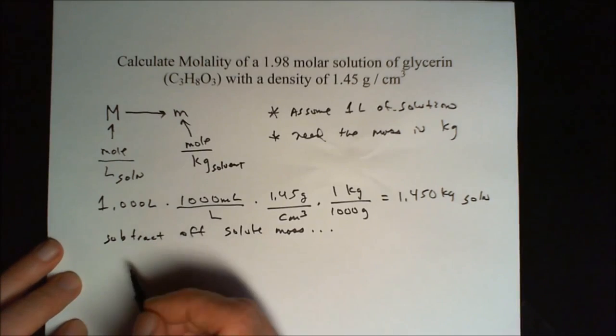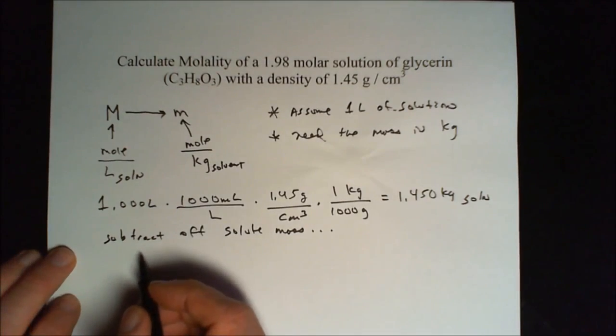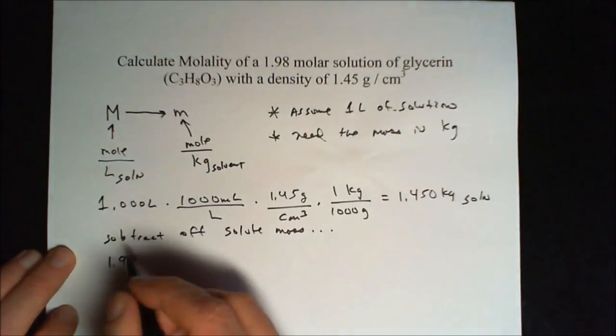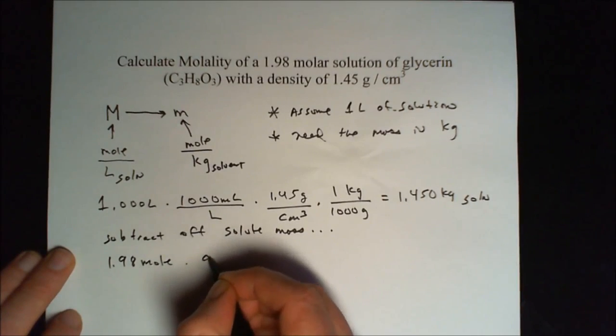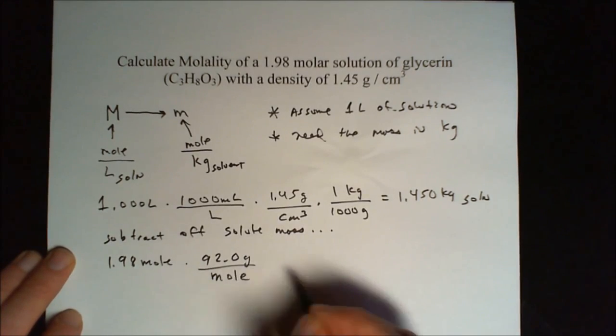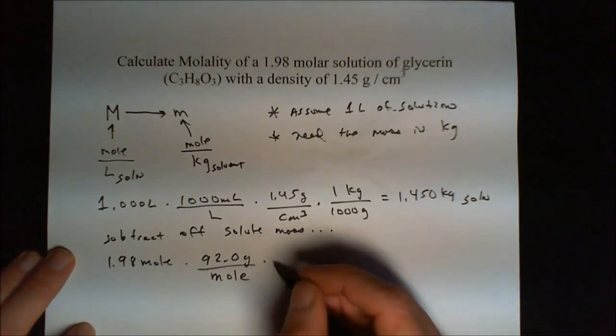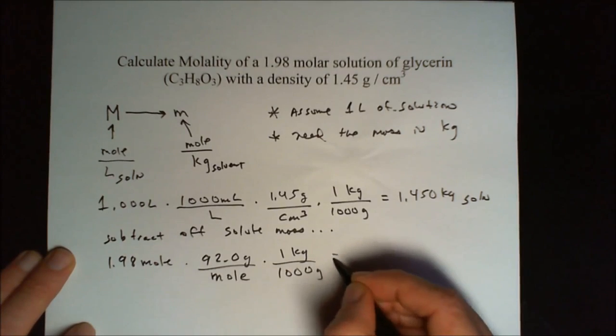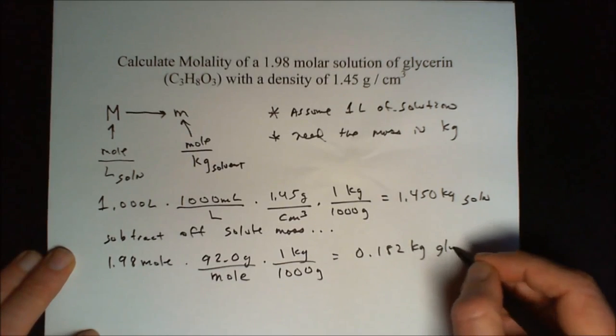And to do that, we need to know how many grams of solute we have, which is the glycerin. And so we know we have 1.98 moles of it, because that's what molar means. And glycerin has a molecular weight of 92.0 grams per mole. And we need that in kilograms as well if we're going to subtract it off kilograms, and that means 1 kilogram per 1,000 grams. And that gives us 0.182 kilograms of glycerin.